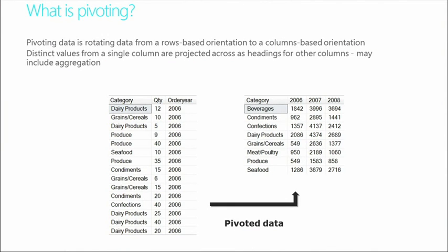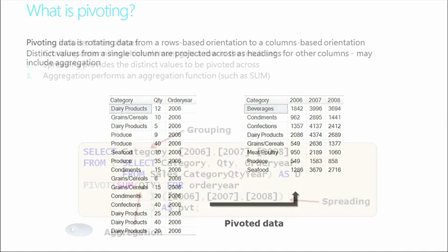Let's move into grouping sets, and in here we're going to talk about pivoting. Pivoting is kind of unique in the sense that we take the rows. We've got category, quantity, and order year. Under category we've got different items, different products, quantity, and order year. Now what we do is we can spin those and kind of rotate the columns. So under category we maintain, in this case, beverages — but now we've created a column for each of the years available for beverages. This is called a pivoted table, where we create distinct values from a single column and set up the headings for other columns.